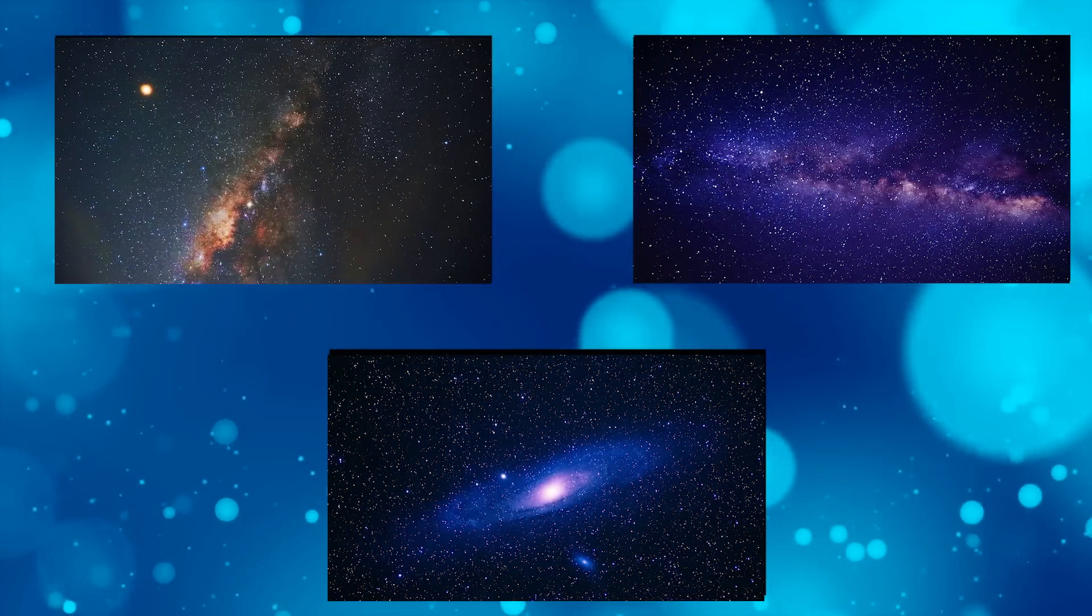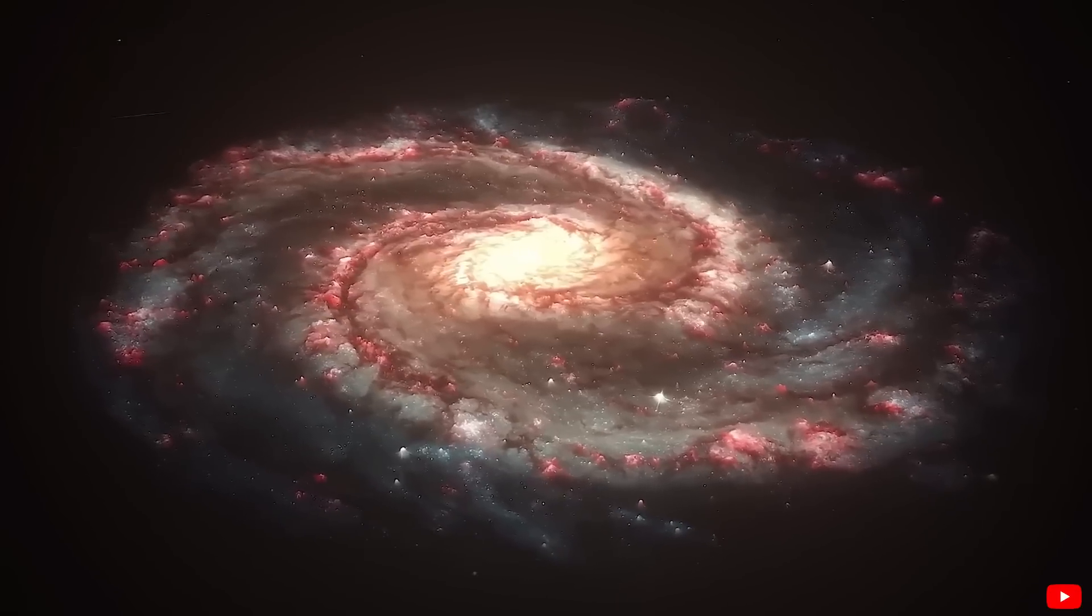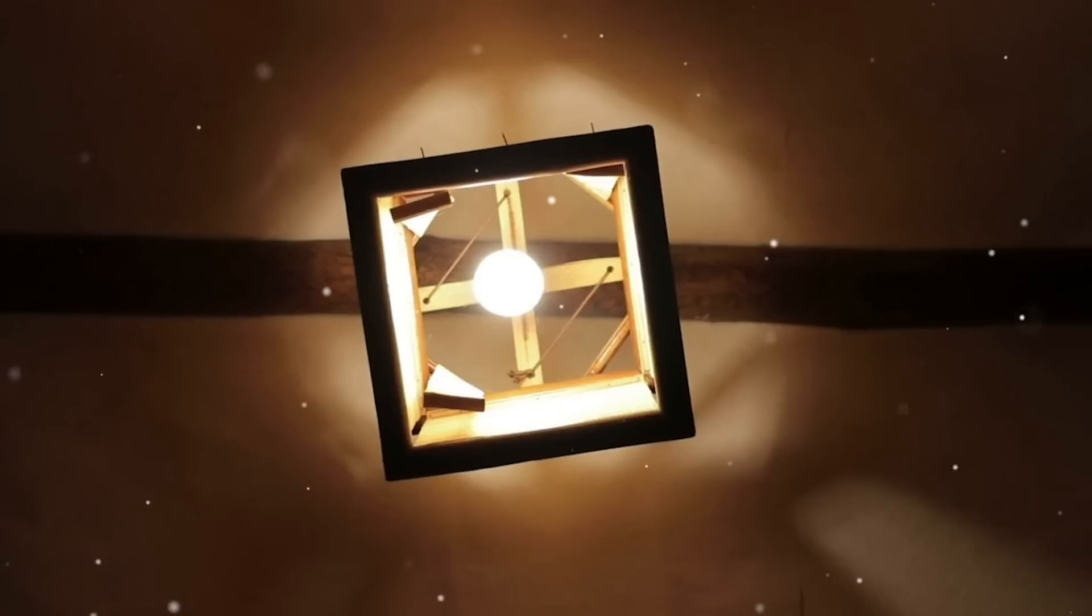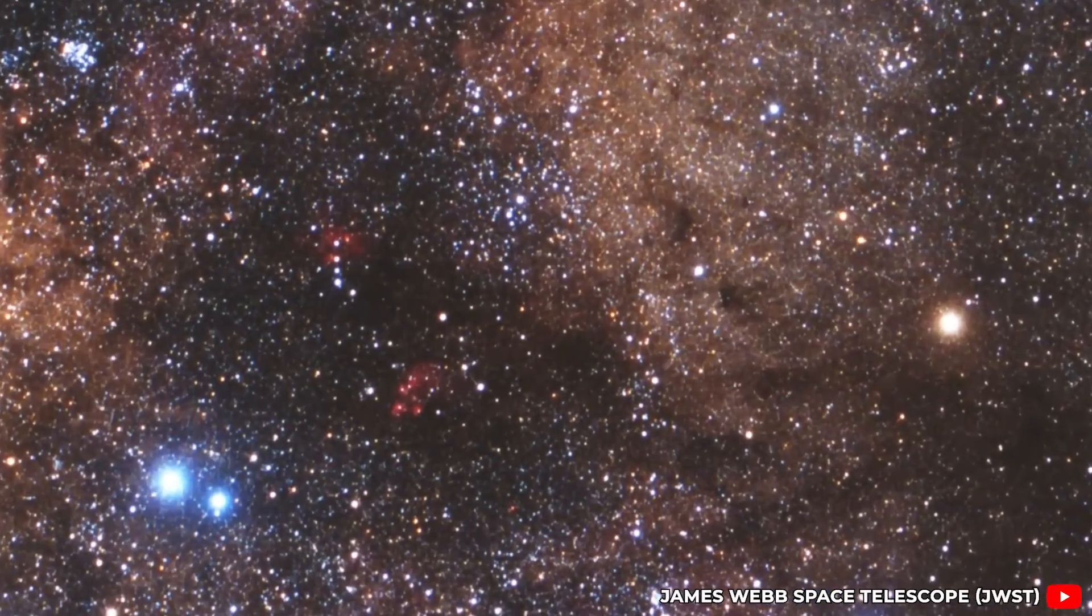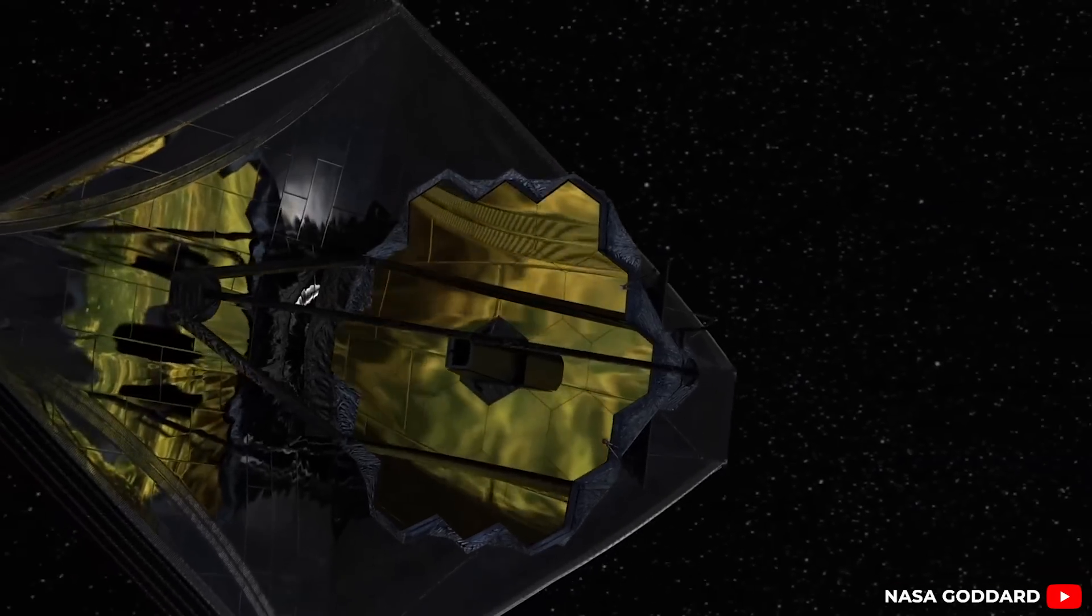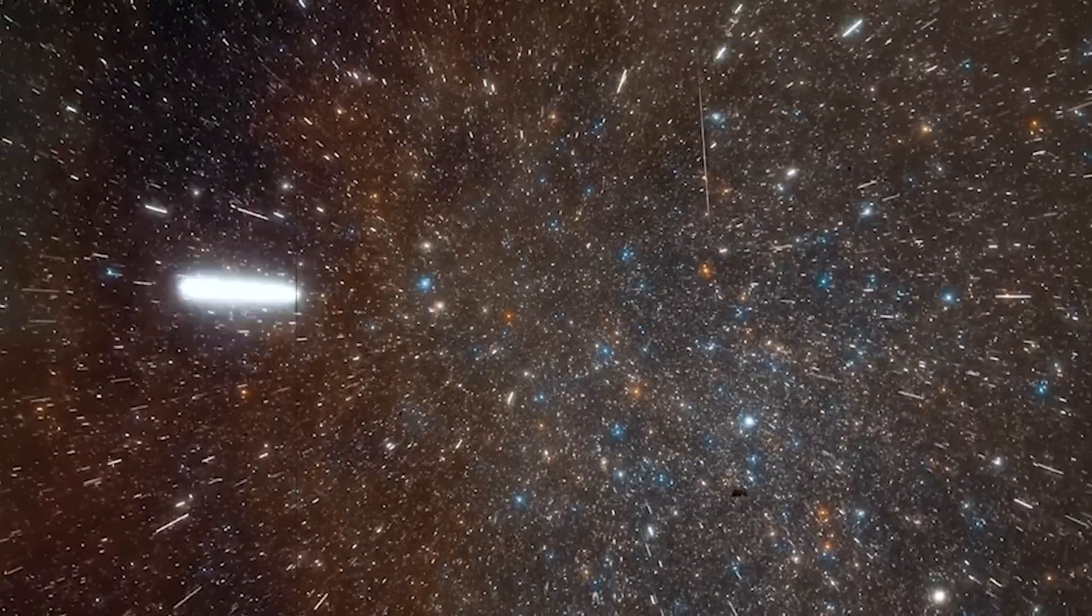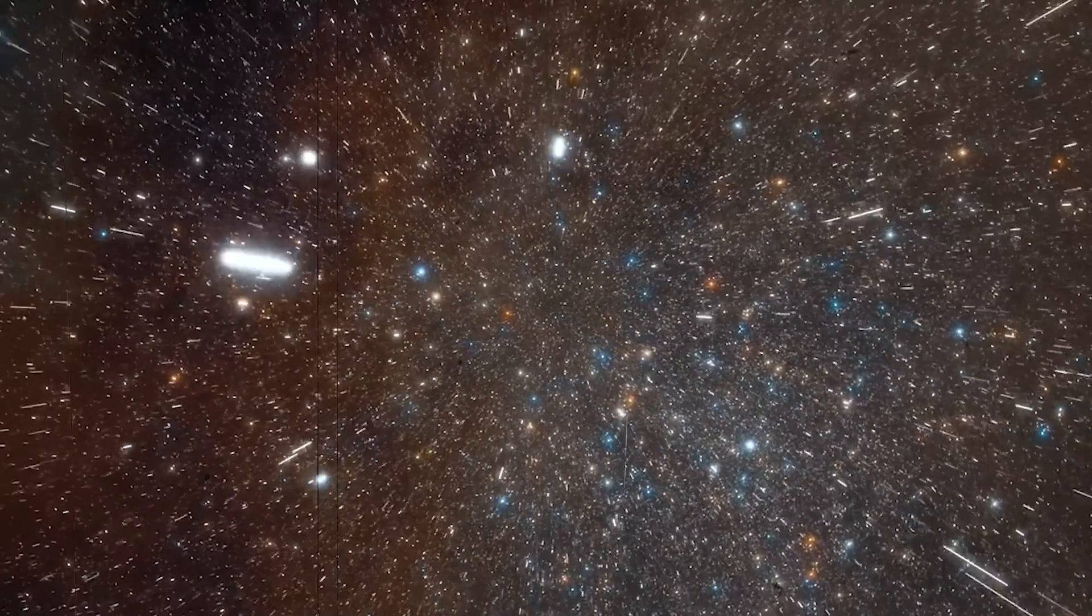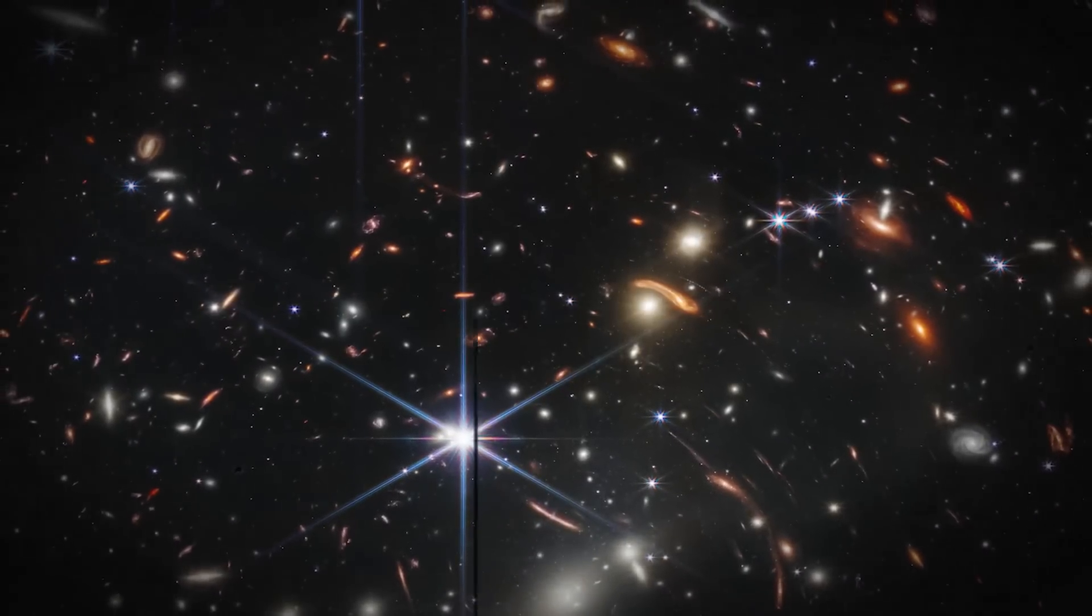But this discovery wasn't a one-off. Webb kept pulling more of these bright ancient galaxies out of the cosmic dark. It was like turning on a light in a room we assumed was empty, only to find it filled with objects we never expected. Before JWST, theories suggested these early galaxies would be rare and faint, barely detectable. Now they seemed to be everywhere, shining boldly when the universe was still in its cosmic infancy.